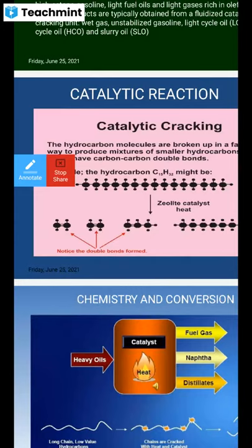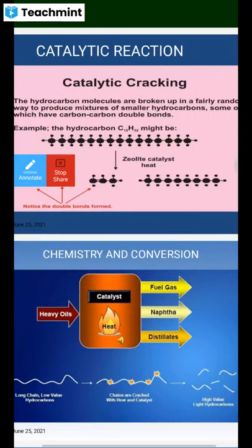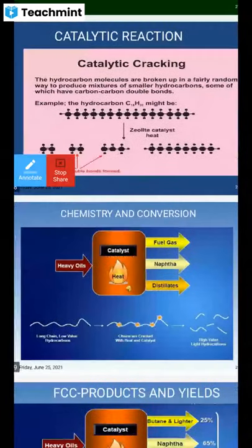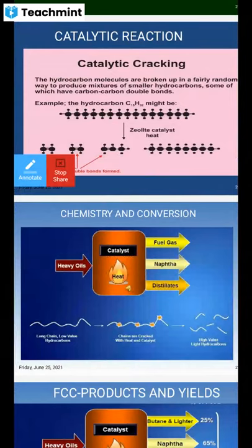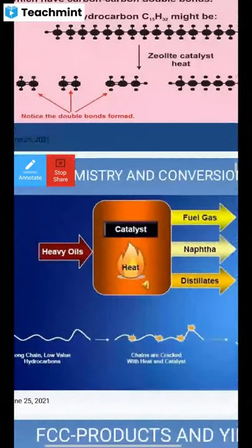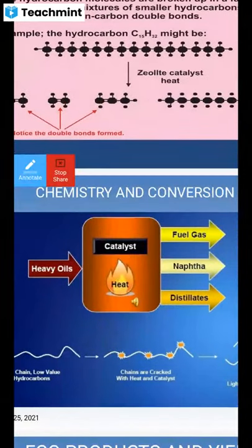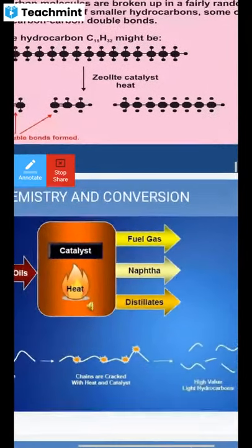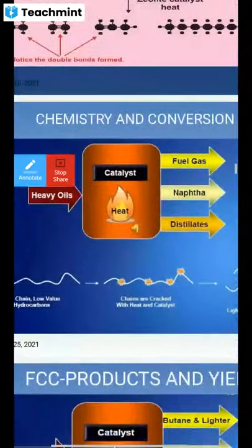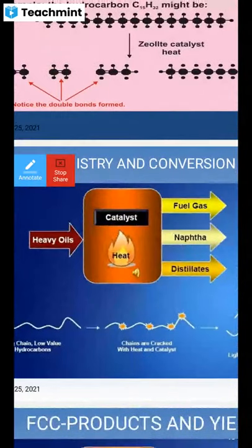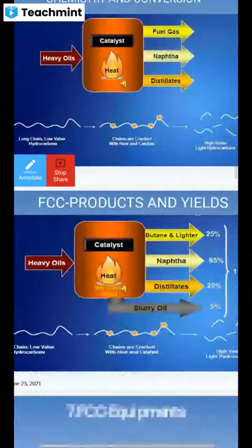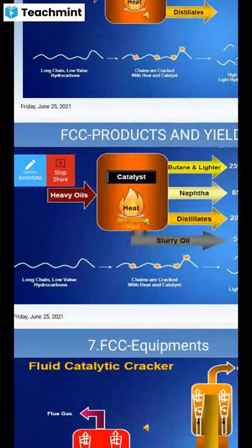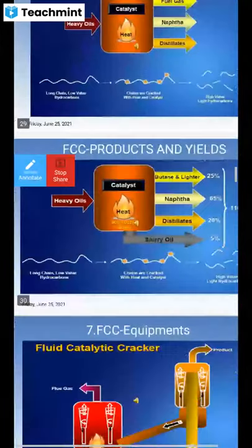The hydrocarbon molecules react on the zeolite catalyst in a fairly random way to products — a mixture of elements, some of which contain carbon-carbon double bonds. For example, hydrocarbon C18 gives C15H32 on the zeolite catalyst, forming double-bond alkenes. The chemistry shows that heavy oils with catalyst give fuel gas, naphtha, and distillates. These are the process products and yields.